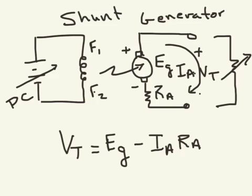So VT equals EG minus IA RA for a separately excited shunt generator.